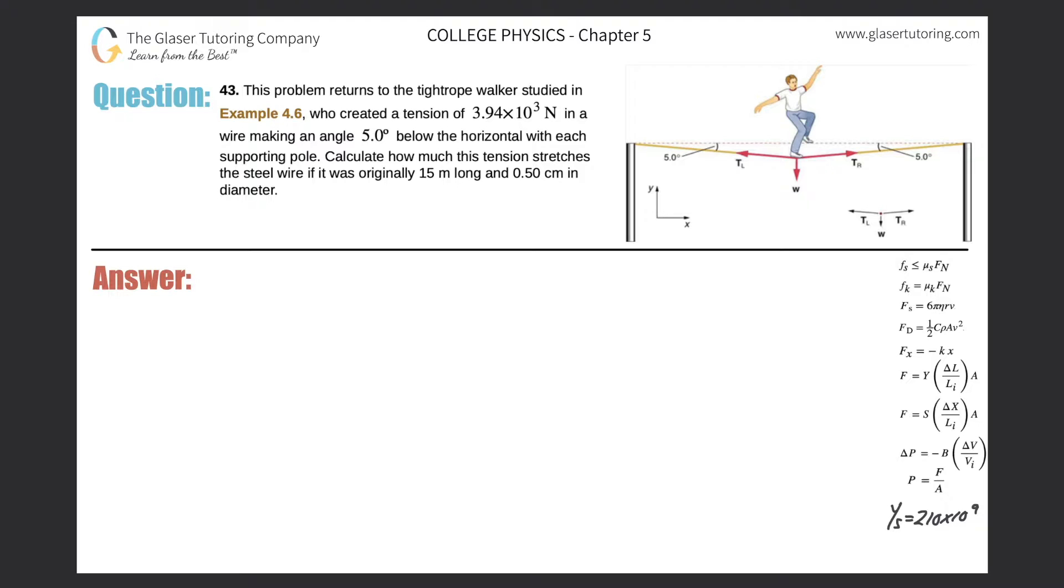Number 43. This problem returns to the tightrope walker studied in example 4.6, who created a tension of 3.94 times 10³ Newtons in a wire making an angle of 5 degrees below the horizontal with each supporting pole. Calculate how much this tension stretches the steel wire if it was originally 15 meters long and 0.5 centimeters in diameter.